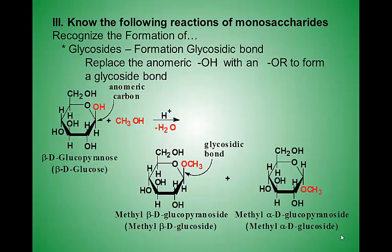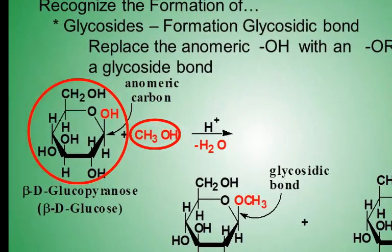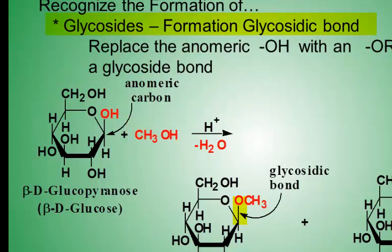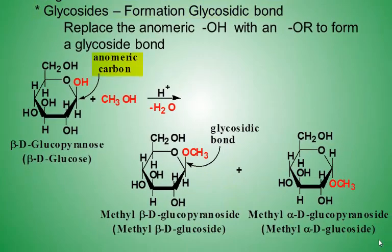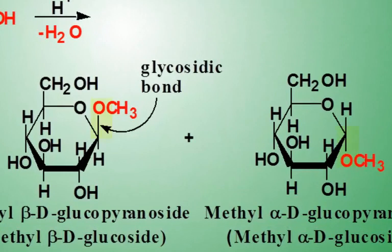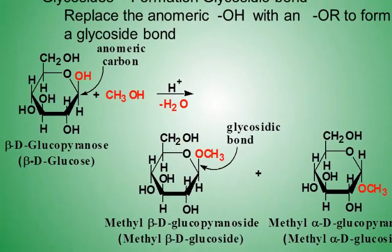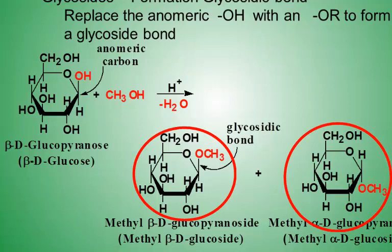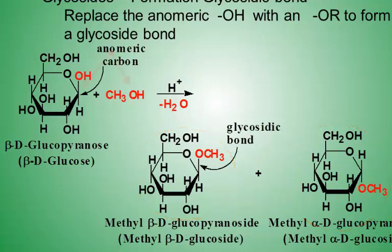An important reaction between a cyclic monosaccharide and other molecules is the formation of a glycosidic bond. The anomeric carbon in a cyclic monosaccharide plays an active role in forming a glycosidic bond, which is a bond between the anomeric carbon and the oxygen of another molecule. For example, glucose reacts with methanol to form two new molecules — the glycosidic bond is between the anomeric carbon and the oxygen of the methanol molecule, forming the beta version and the alpha version.